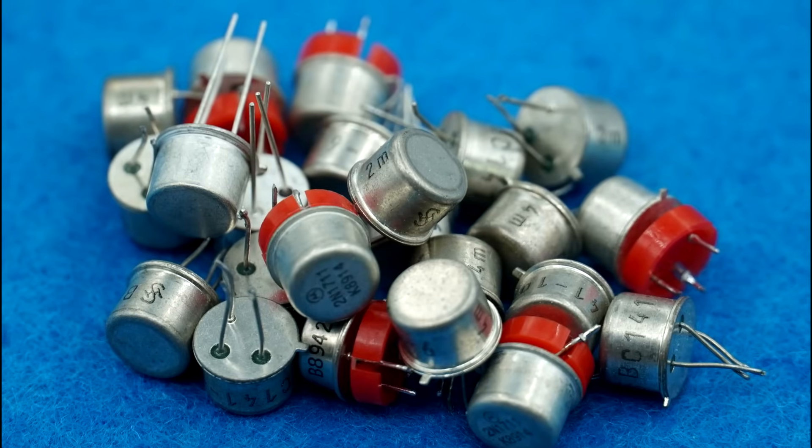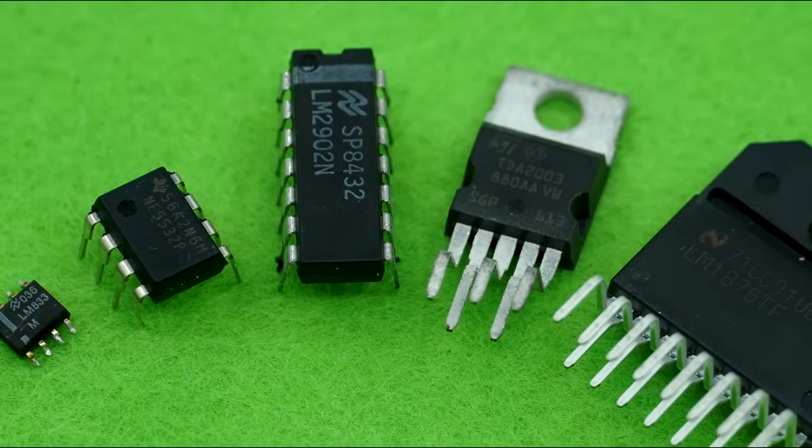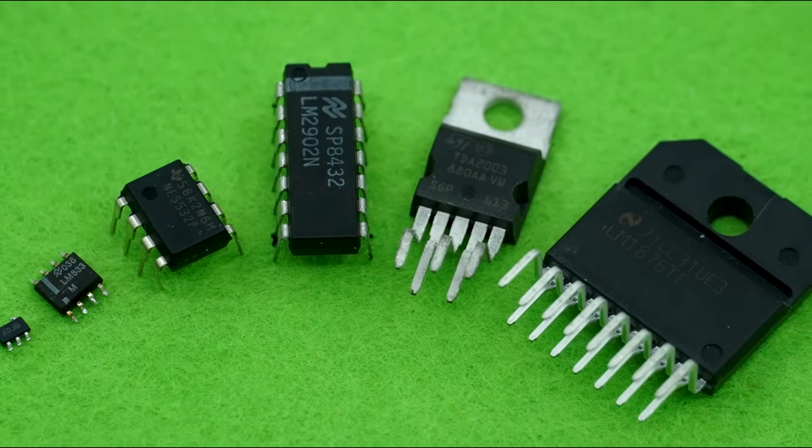the thing that makes an active filter active is the usage of some sort of amplification element. This could be a transistor, but to make life easy, it's usually an operational amplifier. This brings certain important benefits like impedance adaptation, interstage isolation, gain and adjustable Q factor, but it also brings problems, like the necessity for power supplies and limited frequency response.